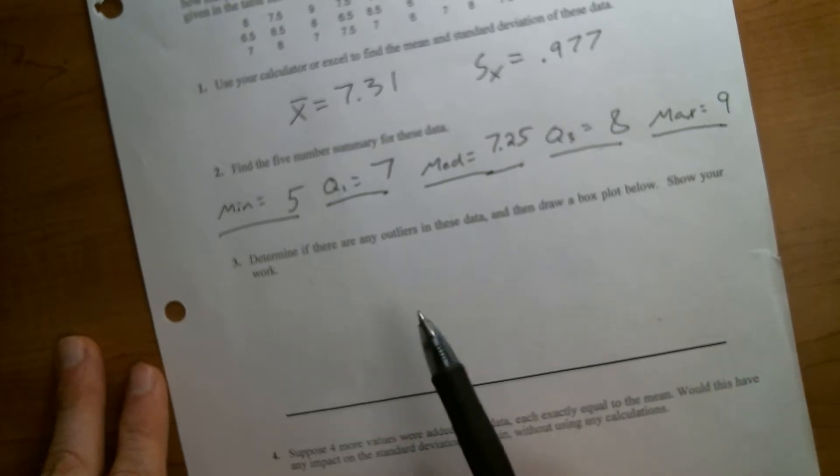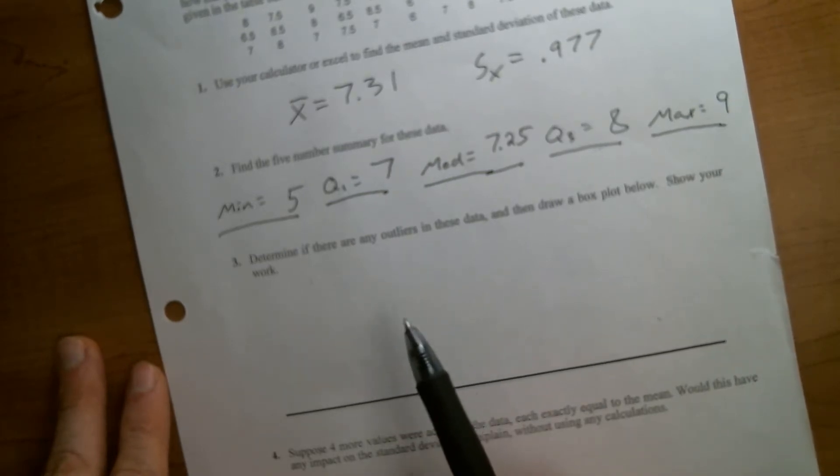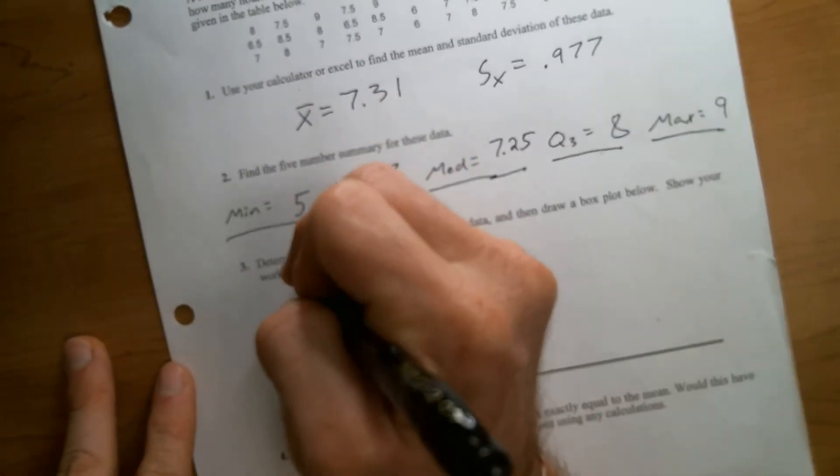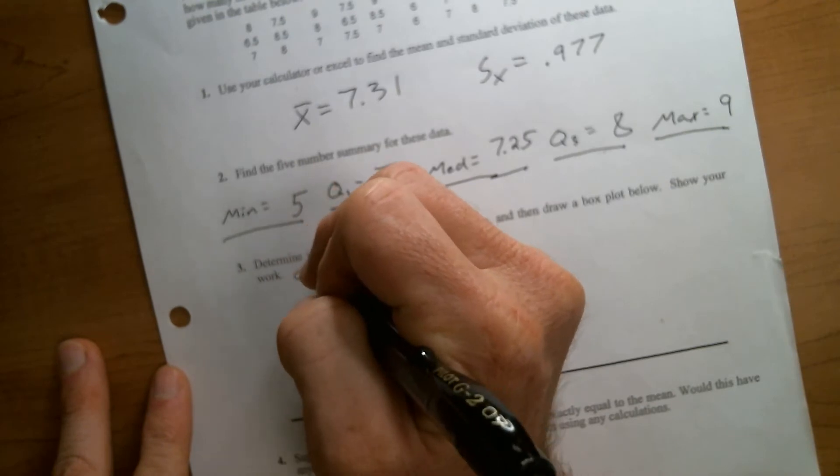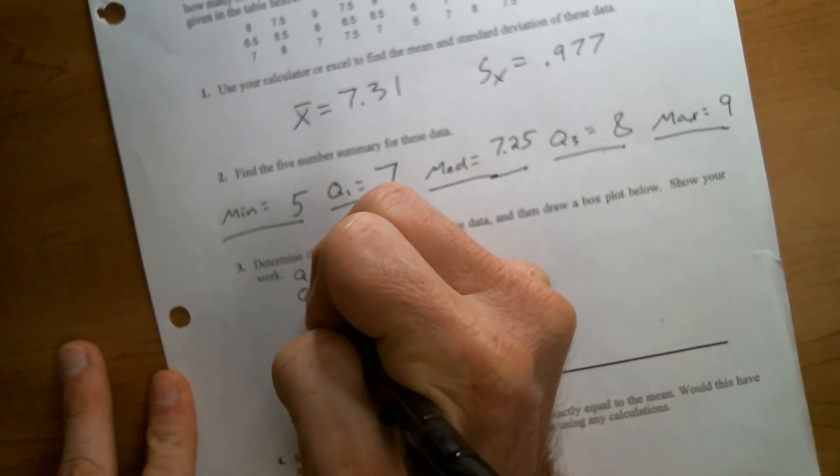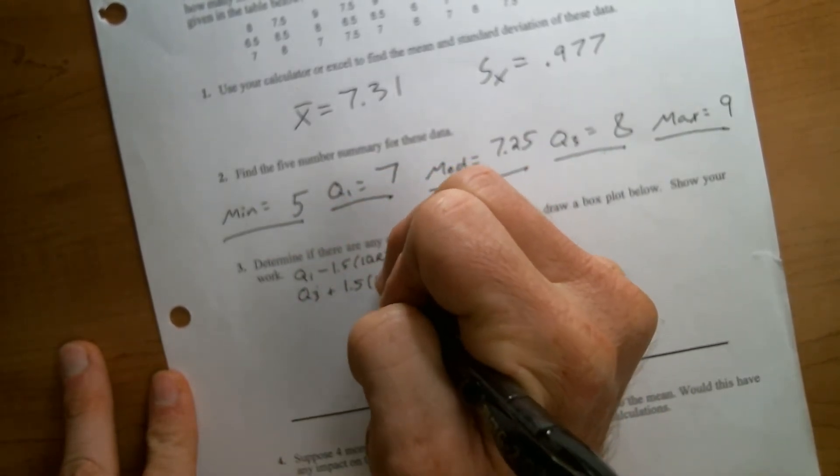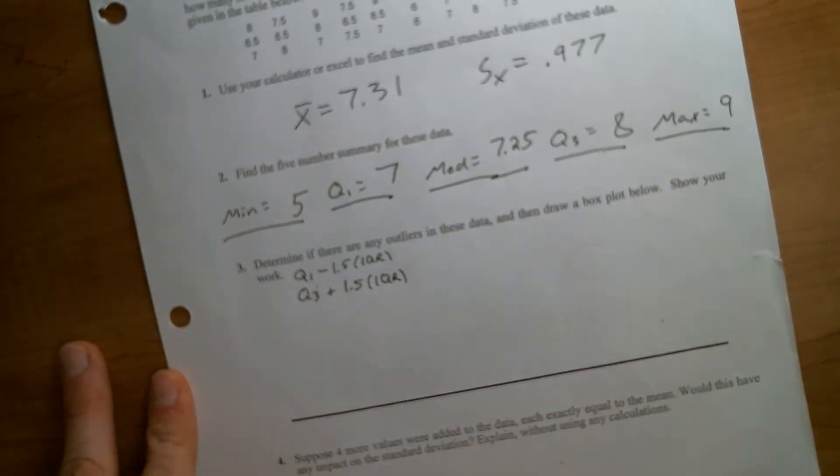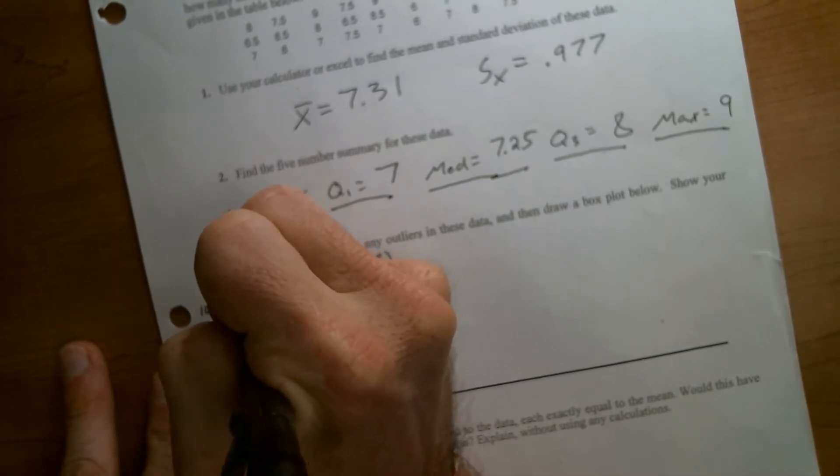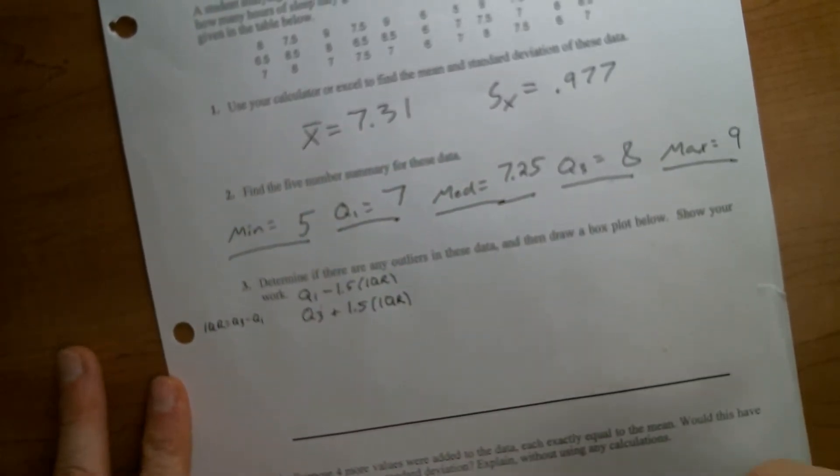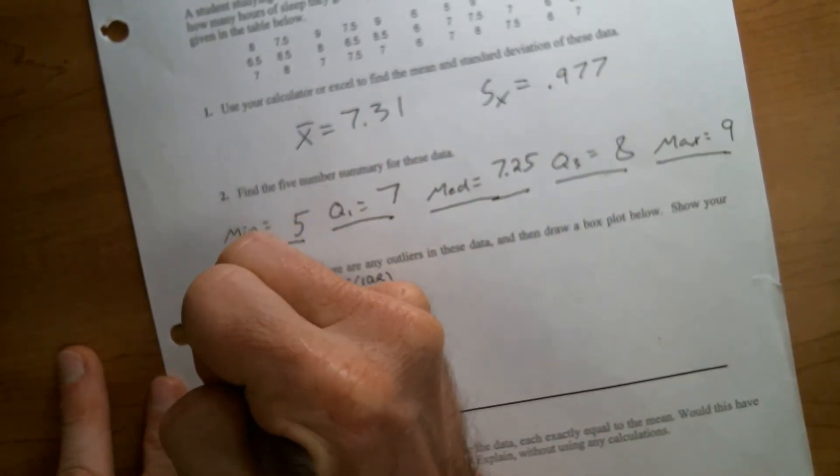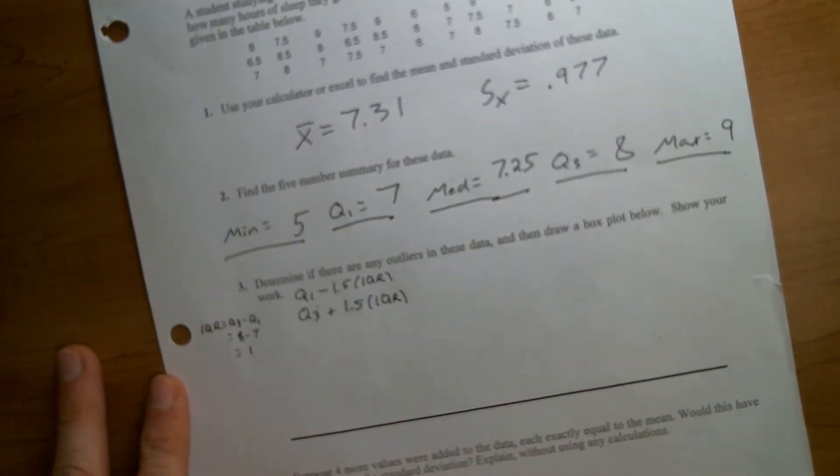We use those numbers to create box plots. Now in a stats class, we have to check for outliers before we make our box plot. So our test for outliers are Q1 minus 1.5 times the IQR and Q3 plus 1.5 times the IQR. And IQR is just Q3 minus Q1, which in our case, 8 minus 7, or just 1.